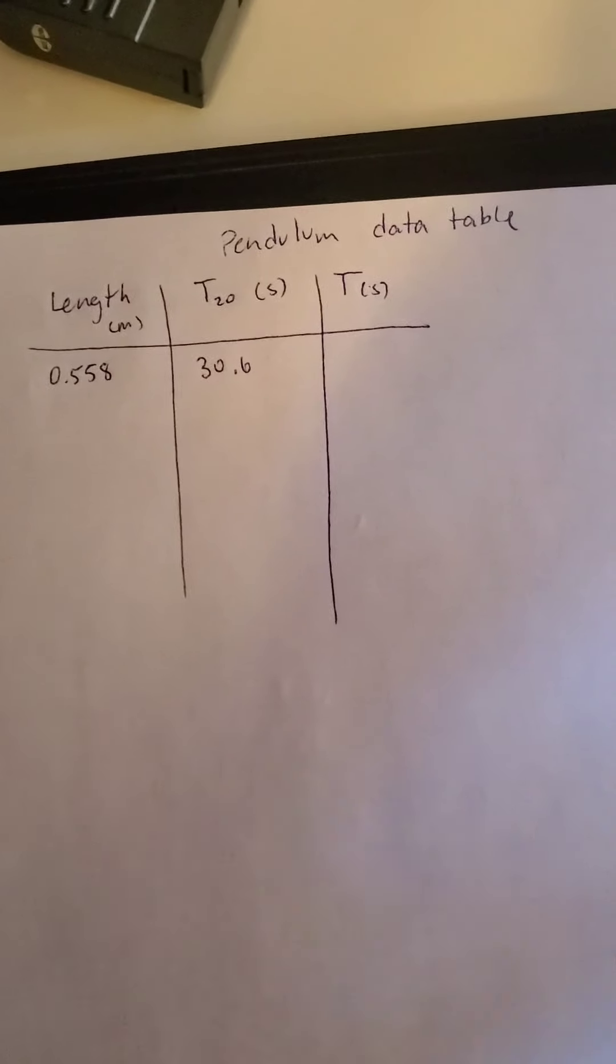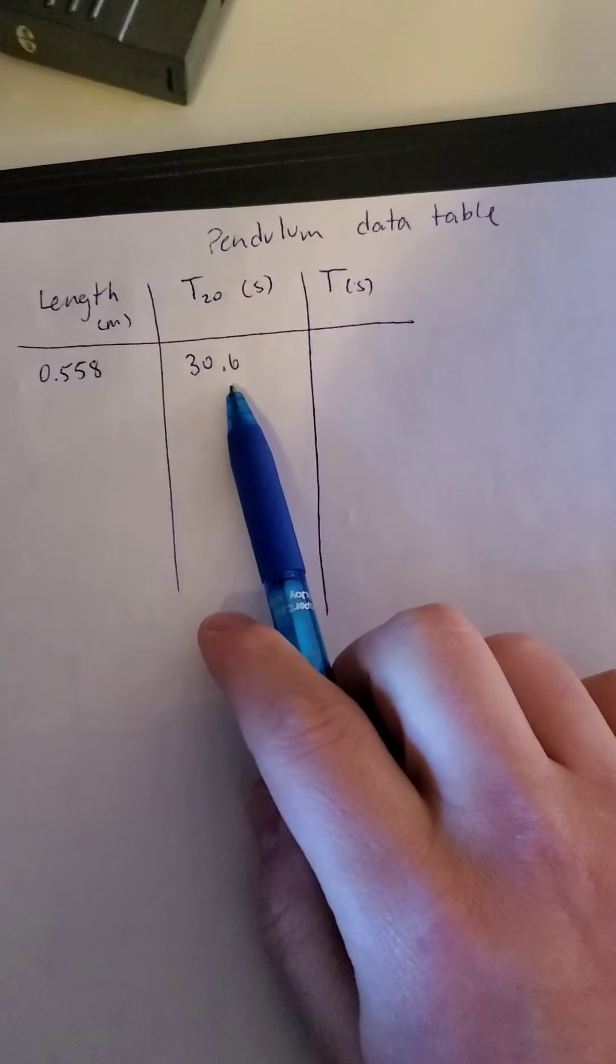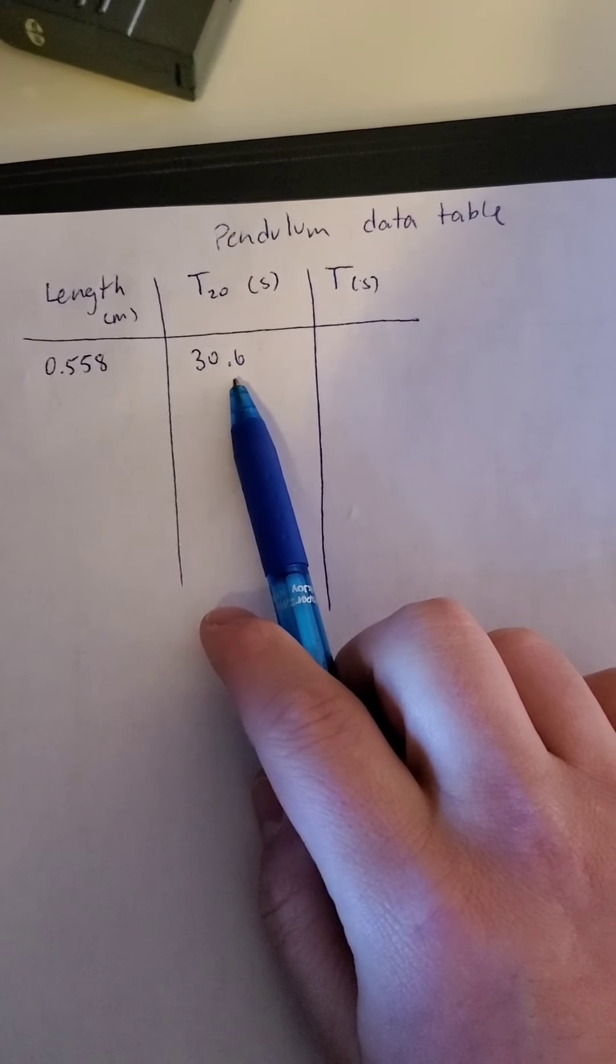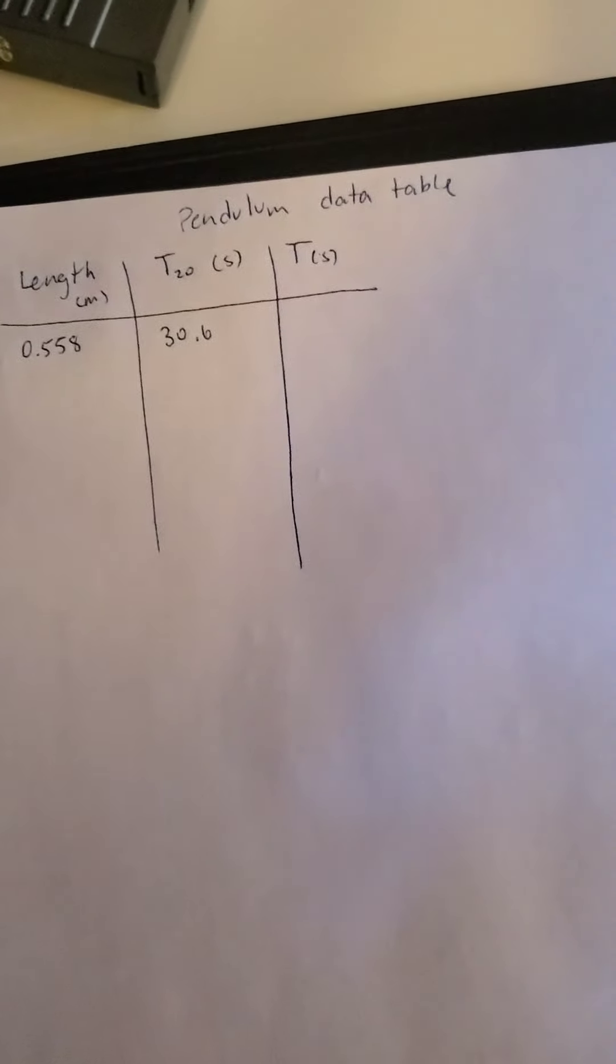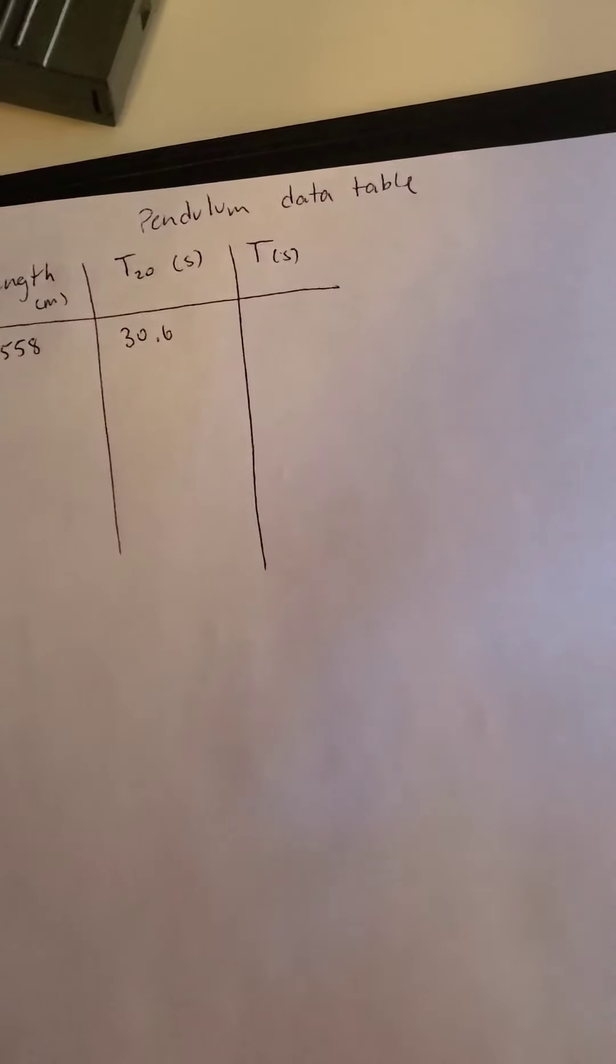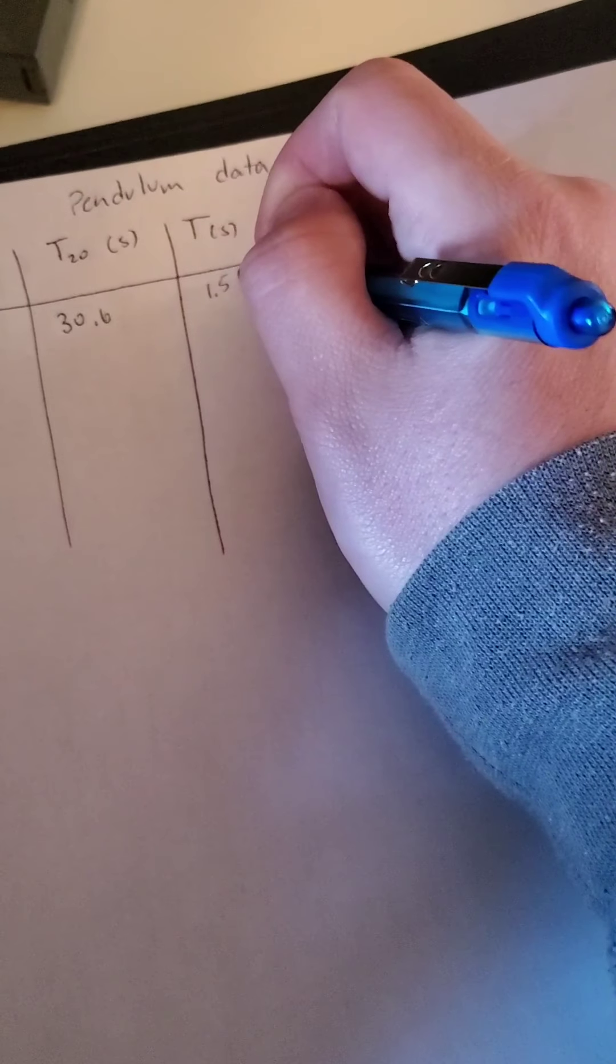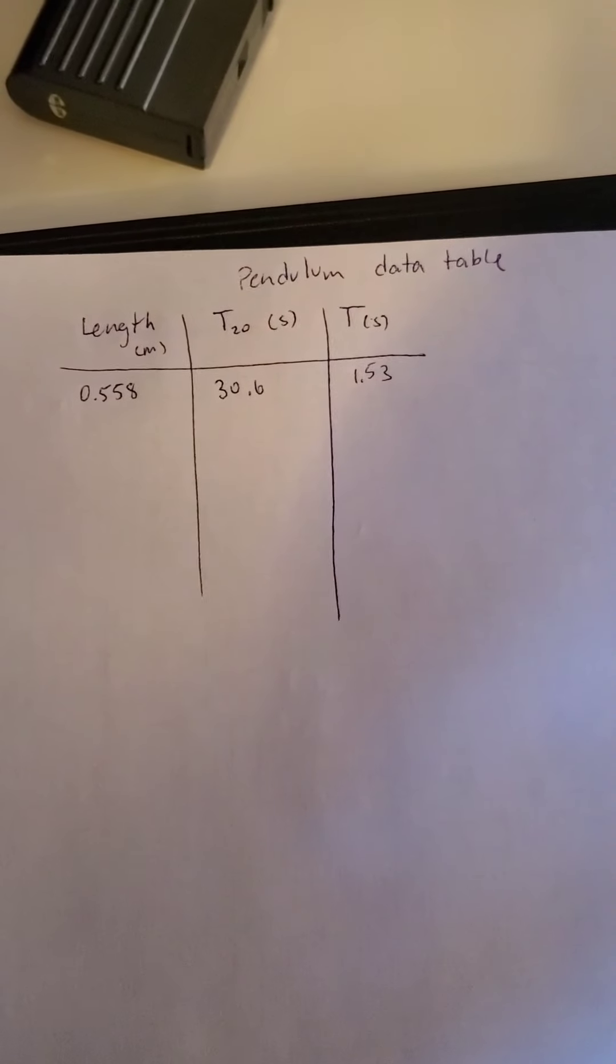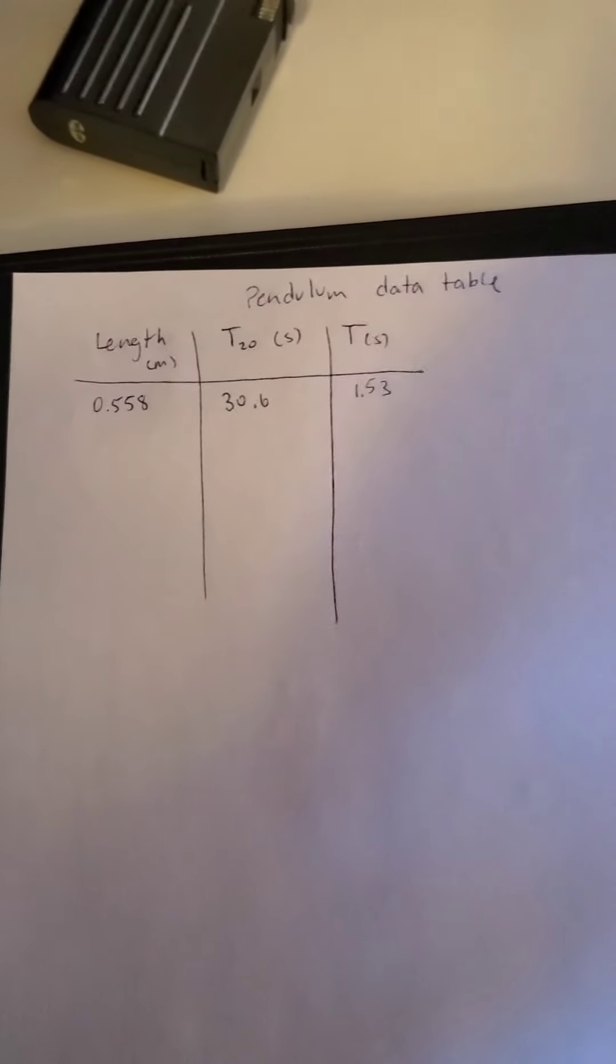Here's what my data table is going to look like. I measured the length of my pendulum to be 0.558 meters, and I timed my 20 swings to be 30.6 seconds. The reason we do 20 is then if we divide that by 20 to get a period, it's going to be way more accurate than if we just tried to time one period. So I get 1.53 seconds for that length. What I'm going to do next is change the length and repeat this entire process.